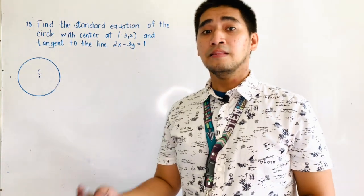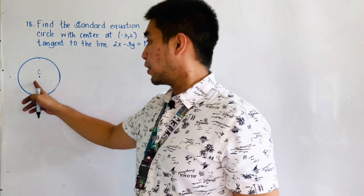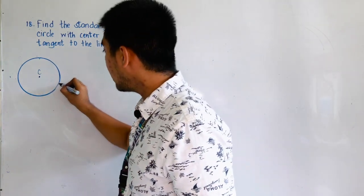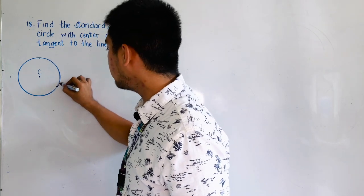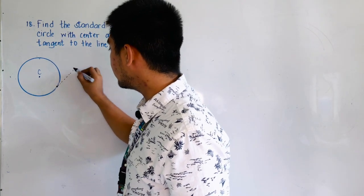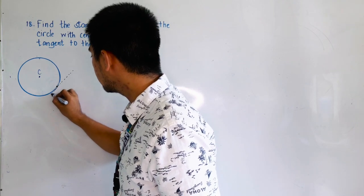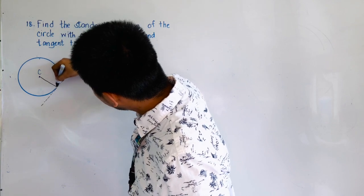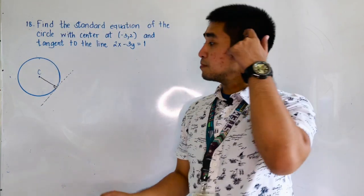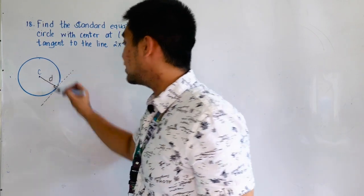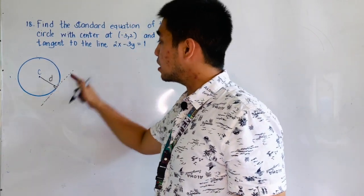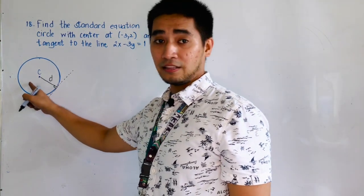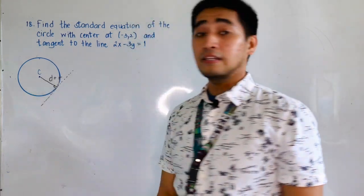Before we discuss this, let us first discuss the distance between a point and a line. Here we have a point which is the center, and from another point — the point of tangency — to the line, that segment is perpendicular. That perpendicular distance is also equal to the radius.